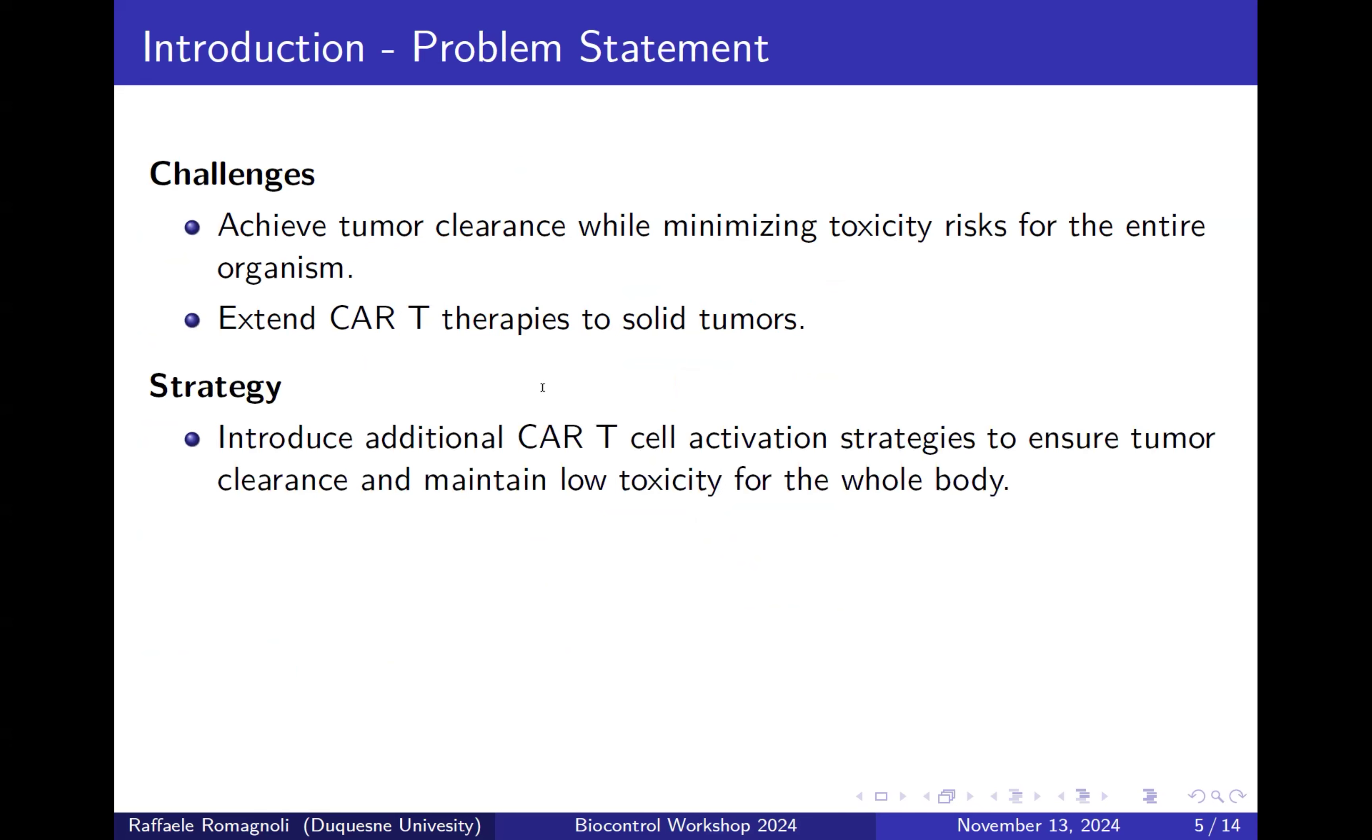In particular, the strategy that they are working on is to introduce additional CAR-T cell activations in order to regulate the activation to achieve those challenges. How can we analyze the effect of these new activation strategies even before starting the experiments, if we can have some insights? The proposed solution is to develop a control-oriented model and then do some control-oriented analysis. In this case, I'm proposing backstepping analysis in order to check the effect of possible additional activation strategies.